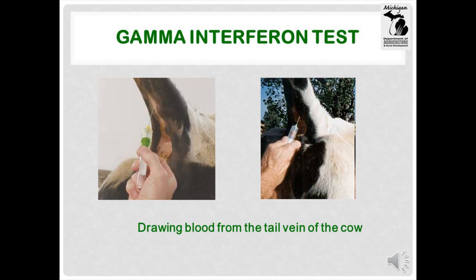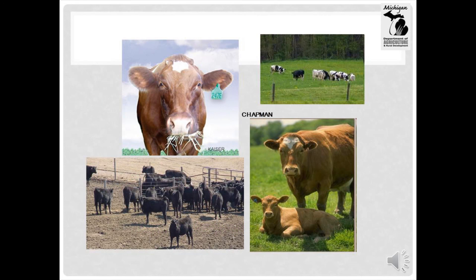The gamma interferon test is basically a test tube version of the CCT. It's done only on cattle — no other species — that respond to the caudal fold test. It measures whether the animal's white blood cells can produce gamma interferon in response to different kinds of tuberculin. The results of the gamma interferon test can be negative or suspect. As with the CCT, negative cattle require no further testing at that time. Cattle that respond to the gamma interferon test require additional investigation depending on many things, including herd status, area of the state, and possibly other factors. Testing cattle for bovine TB assures Michigan's beef and dairy herds are healthy and that the food we produce is safe and plentiful.